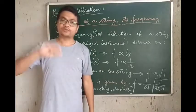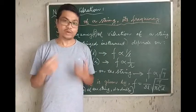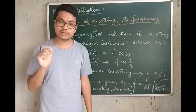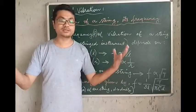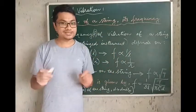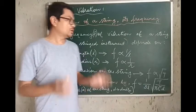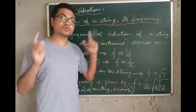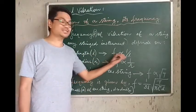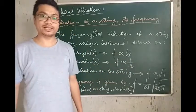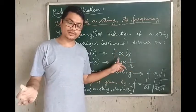Strictly speaking, a vibrating string in the world we live in is not natural vibration, because the amplitude of vibration of the string eventually goes on decreasing — that is, the intensity of sound produced goes on decreasing. But still, a vibrating string produces a definite frequency. We want to see what factors the frequency of vibration of a string is dependent on. The first thing it is dependent on is its length, and we see that frequency is inversely proportional to the length of the string — shorter the length, more the frequency; longer the length, less the frequency.